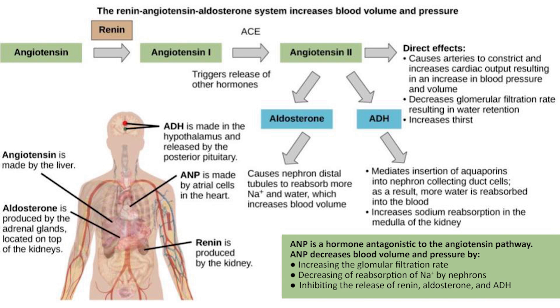When studying these drugs, it's helpful to be familiar with the renin-angiotensin-aldosterone system, which plays an important role in regulating blood pressure and fluid balance. Renin, which is released by the kidneys, stimulates the formation of angiotensin in blood and tissues, which in turn stimulates the release of aldosterone from the adrenal cortex. If the RAA system is abnormally active, blood pressure will be too high. There are many drugs that interrupt different steps in the system to lower blood pressure.